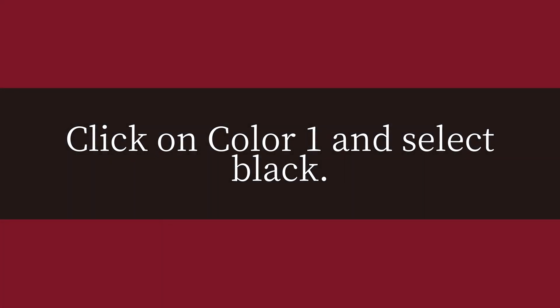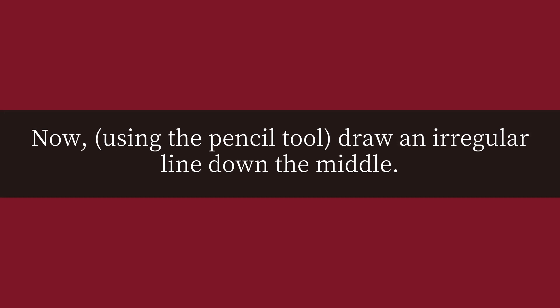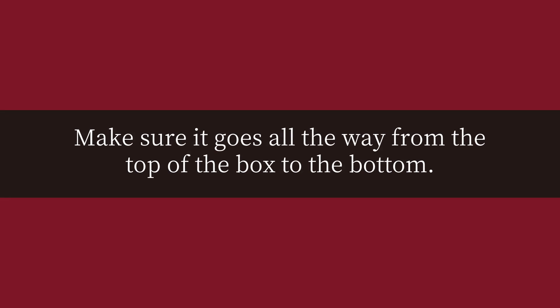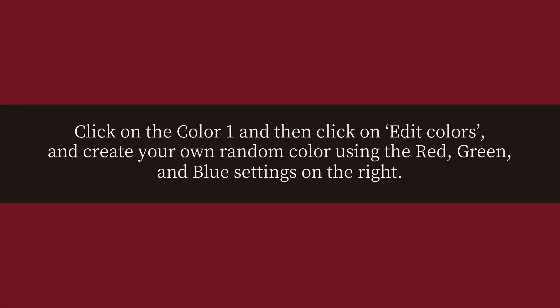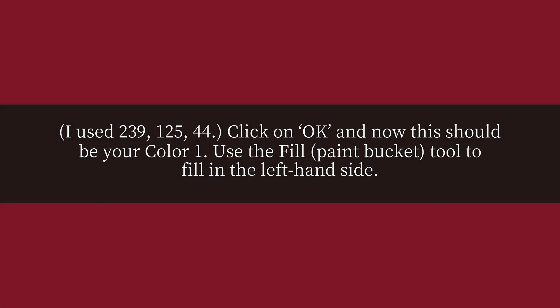Flip on Color 1 and select black. Now, using the pencil tool, draw an irregular line down the middle. Make sure it goes all the way from the top of the box to the bottom. Click on Color 1, then click on Edit Colors, and create your own random color using the red, green, and blue settings on the right. I used 239, 125, 44. Click OK — this should now be your Color 1.